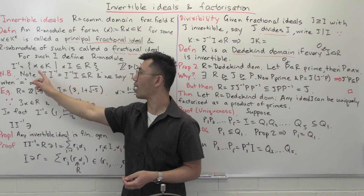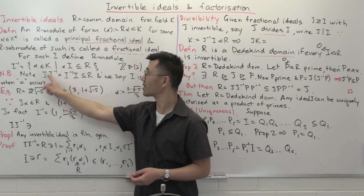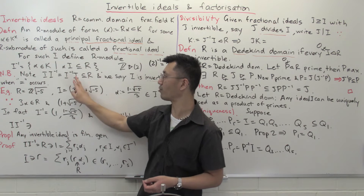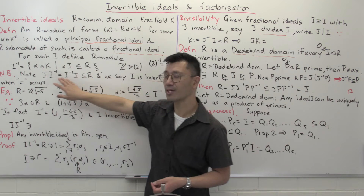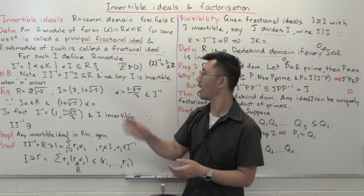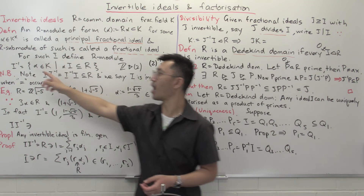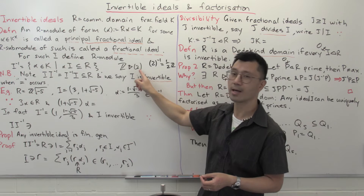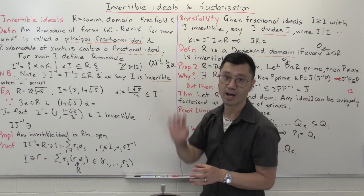As you can see, it's really capturing the notion of an inverse: the principal fractional ideal generated by 2, its inverse is the principal fractional ideal generated by one-half. Note that if you have I and I-inverse where I is a fractional ideal — this is an R-submodule of K — then I times I-inverse is a sum of products, and since any product of something in I with something in I-inverse lands inside R by definition, this II-inverse is always an actual ideal inside R. The definition of invertible is if you actually have equality II-inverse equals R.